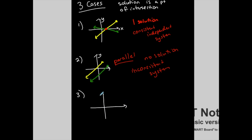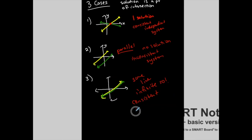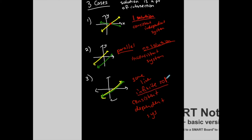The third case: if I graph the first line and then graph the second one, it lies right on top of the first. That means they are the same line — maybe with different equations, but the same line. Every point on one line works for the other, so there are infinite solutions. We call this a consistent dependent system. These are the only three cases: one solution, no solution, or infinite solutions. I'm never going to have only two or only three — always one, none, or infinite.